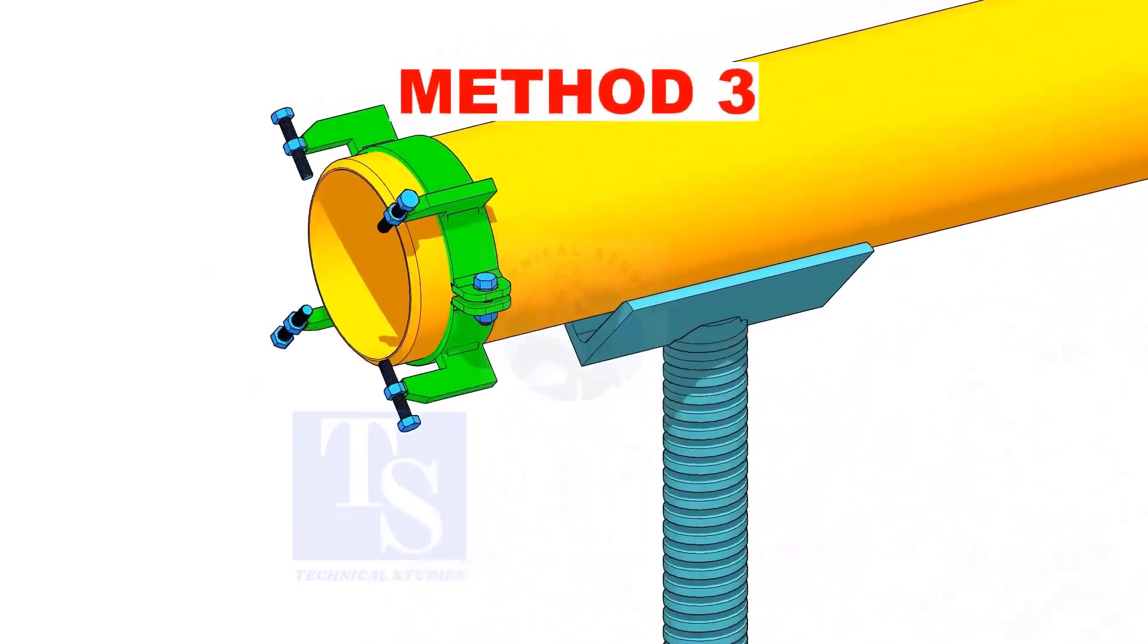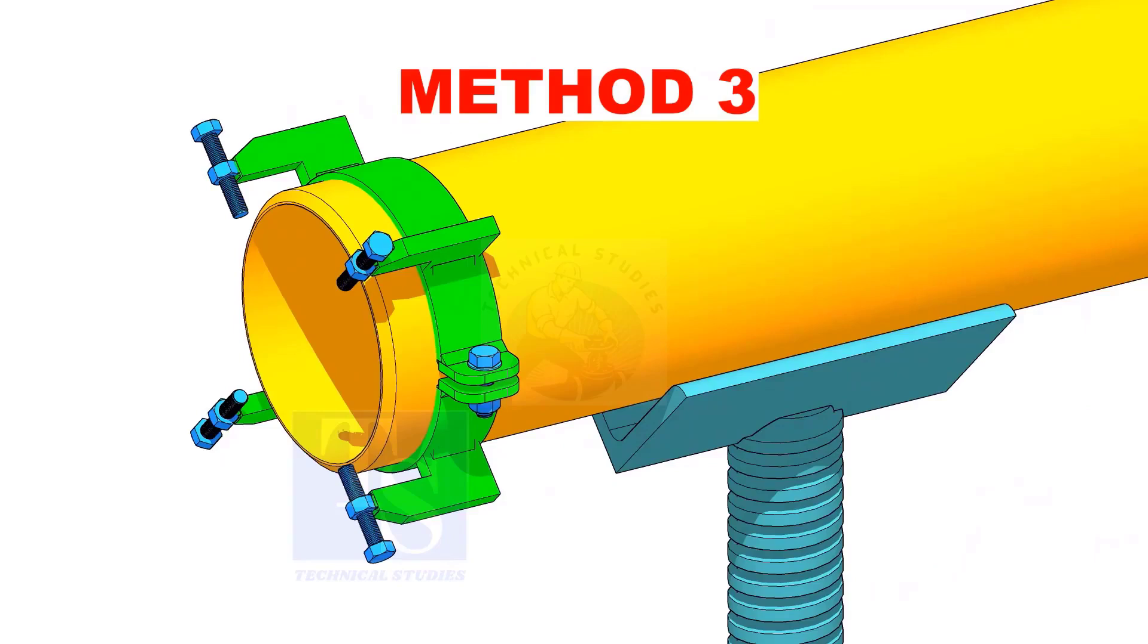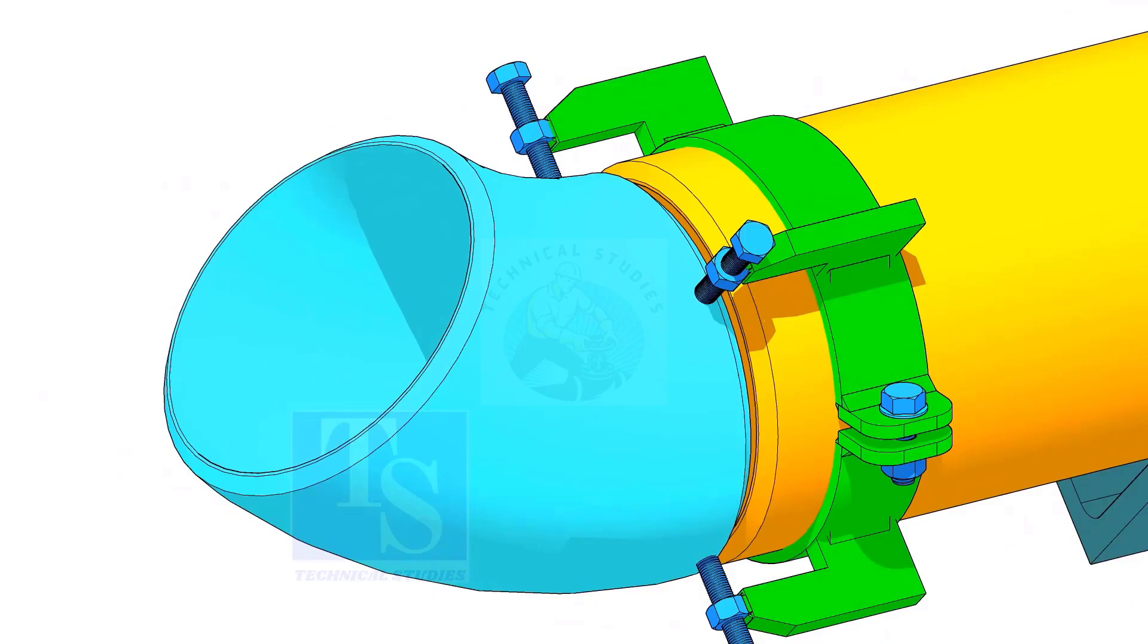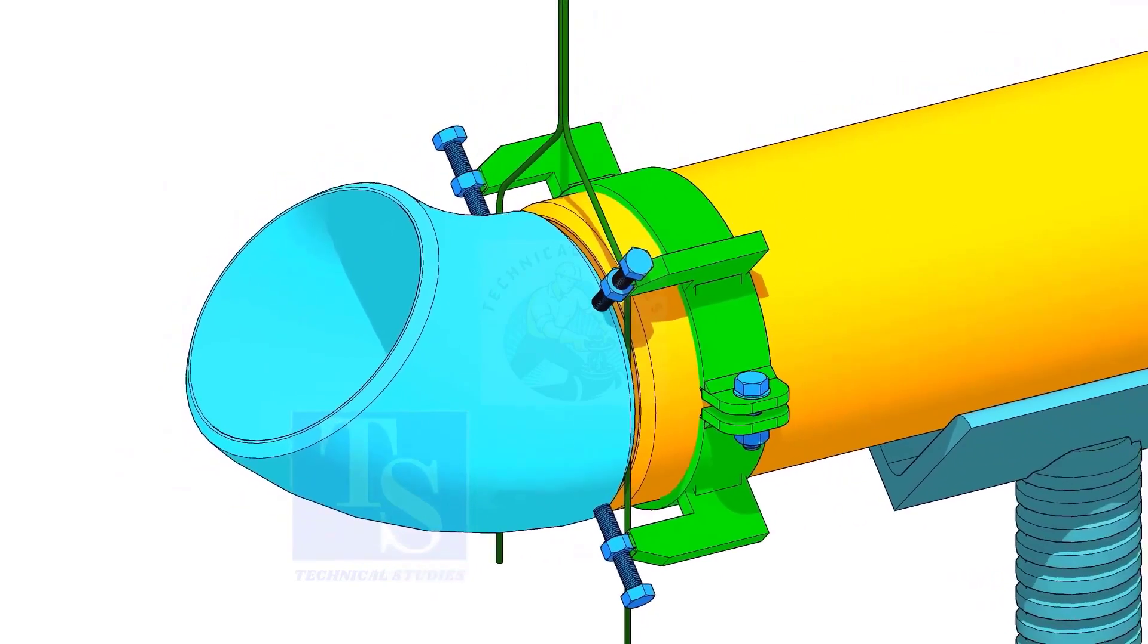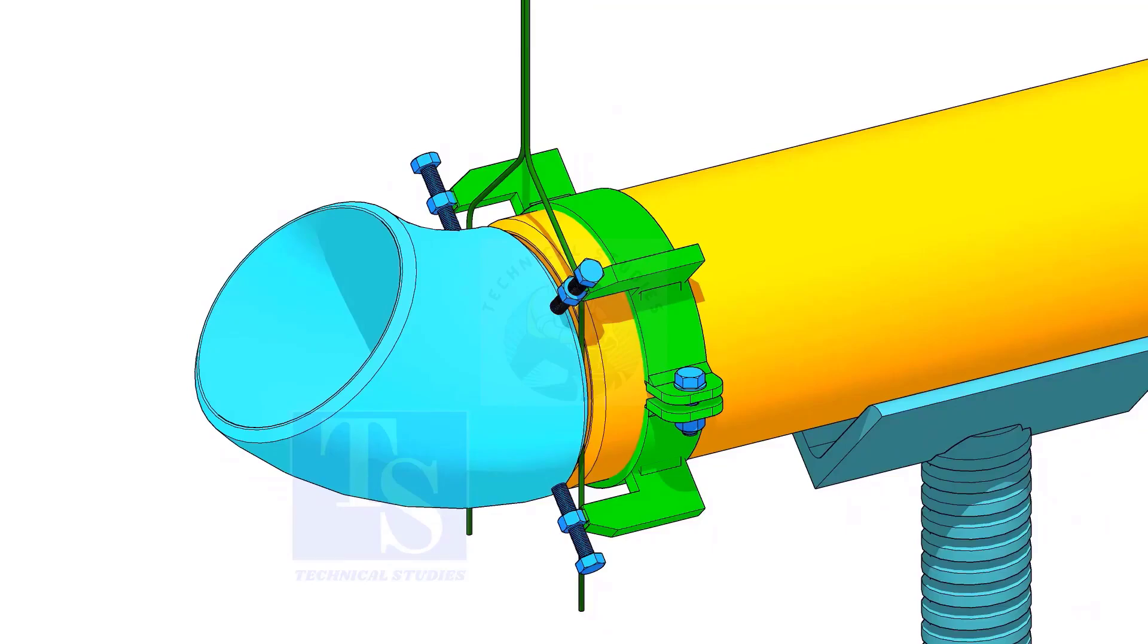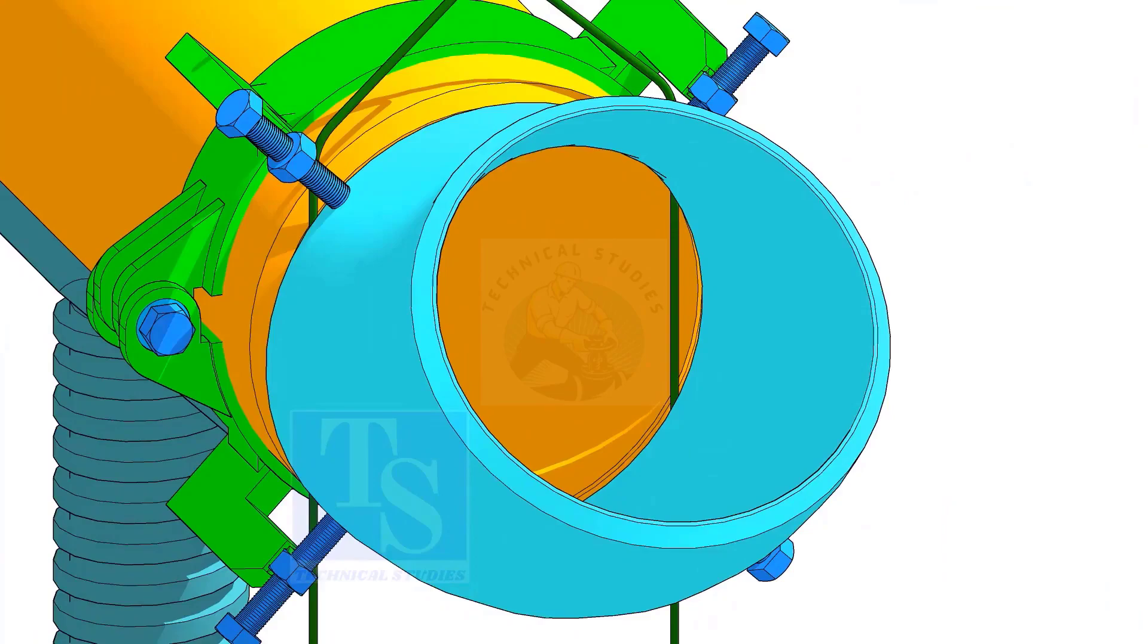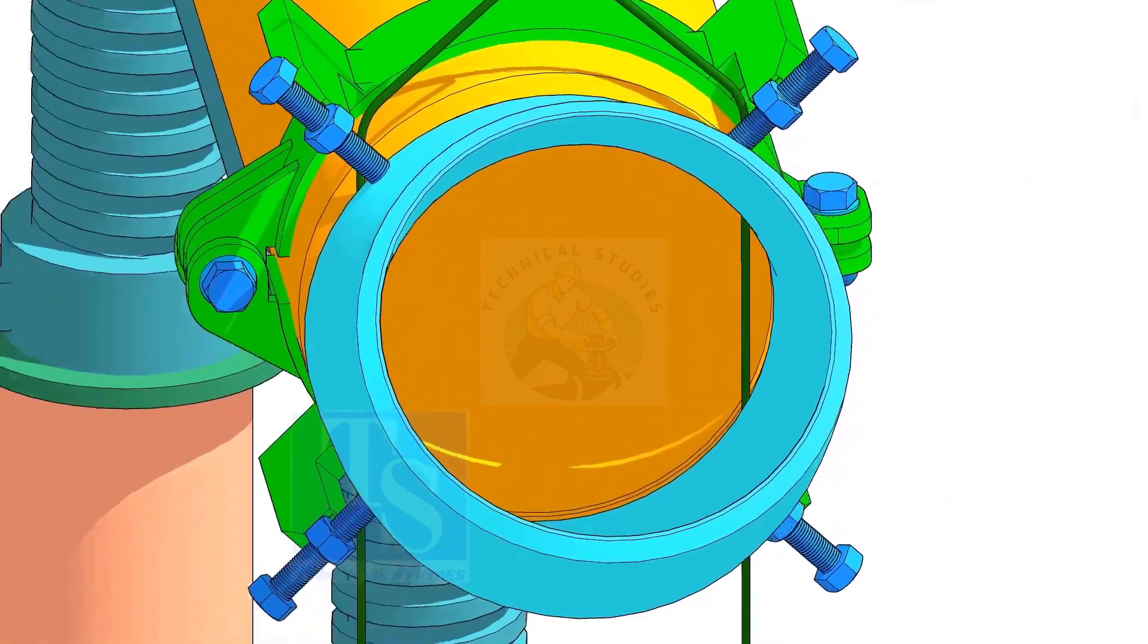Please note that this method is for trained fitters only. After correcting the overlap and the gap, tack weld on both sides of the joint.